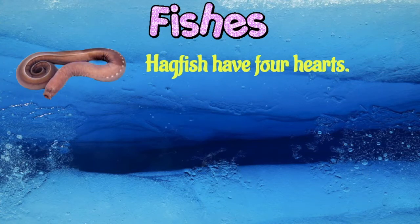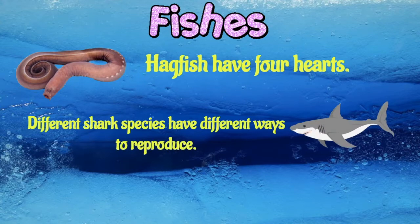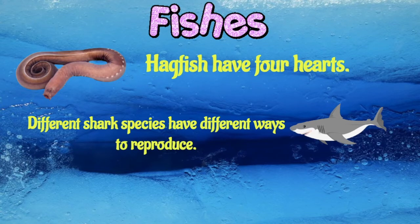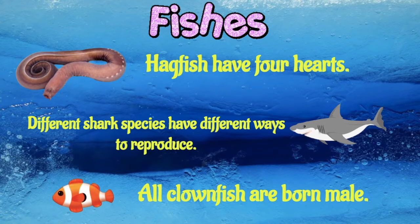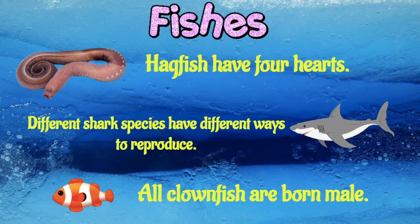Just a quick trivia: carp fish can have four hearts, and they can go for months without eating. Different shark species have different ways to reproduce — there are oviparous, or egg-laying species, and viviparous, or live-bearing species. All clownfish are born male; when the dominant female dies, the dominant male will turn itself into a female.